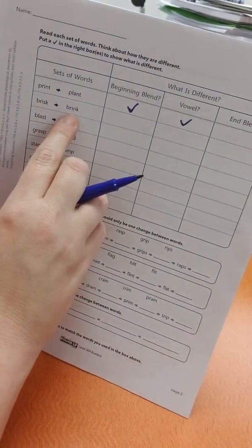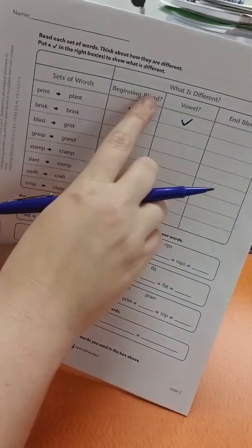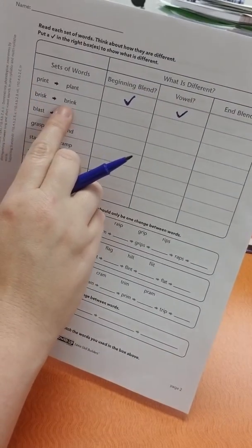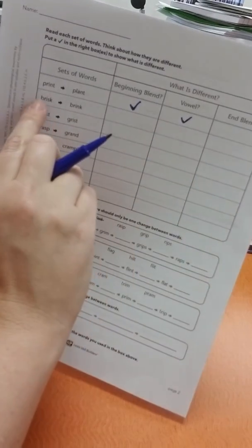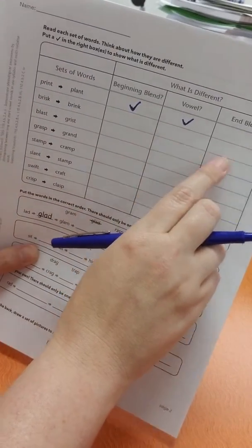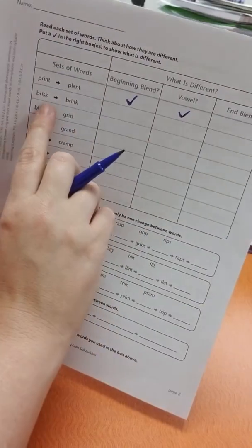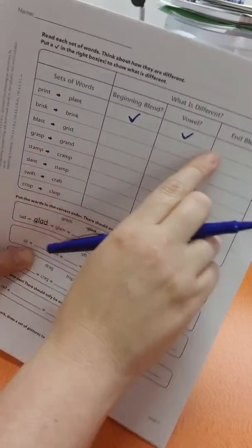So we have brisk, brink. So is the beginning blend different? Br-br, nope. That's the same. So we're going to leave it blank. Is the vowel different? I-I, nope. That's the same. So we're going to leave it blank. Is the end blend different? Sk-ink. Yes. So we're going to check.